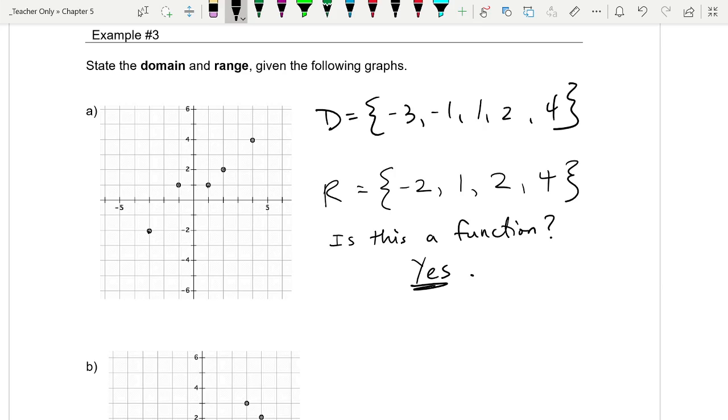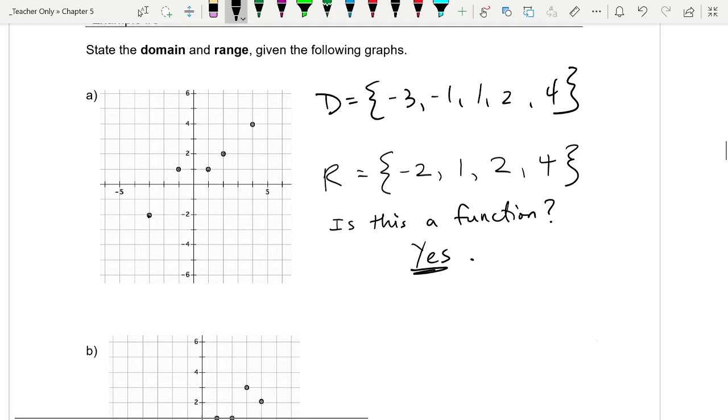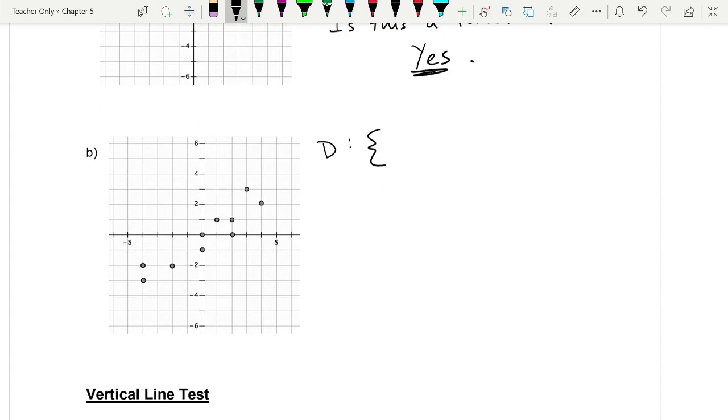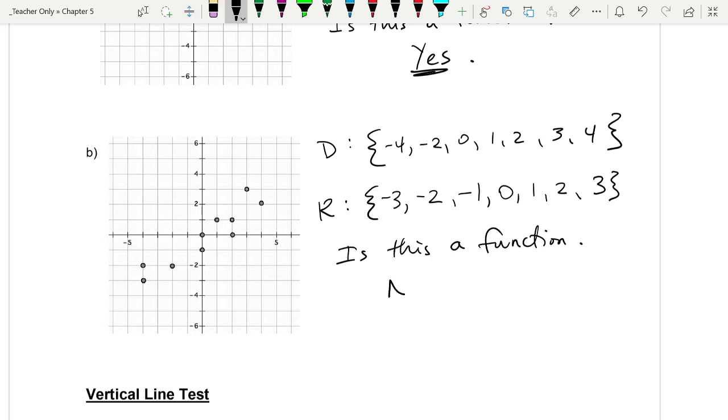So let's try the next one. First of all, how good are you at reading dots? Domain is, let's see, we have negative four, we don't have any negative threes, we have negative two, we don't have any negative ones, we have zeros, ones, twos, threes, fours. Our range, let's count the y dots. We start at the bottom at negative three, we have a negative two, negative one, zero, one, two. We don't miss any. Is this a function?